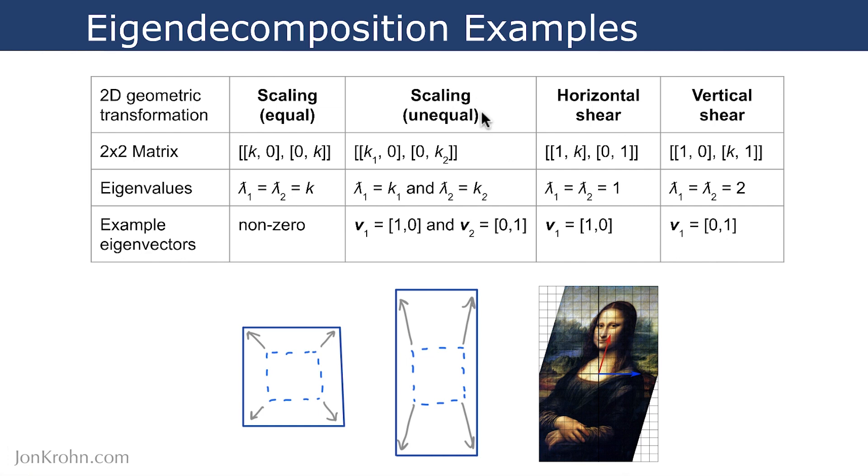For unequal scaling, so where we are scaling more along one axis than the other, so here we're scaling more along the vertical y-axis than the horizontal x-axis, in that case, then we will have a different k1 and k2 value, and the first eigenvector will correspond to one of those k's, and the second will correspond to the other one. And example eigenvectors include these ones here in that kind of circumstance.